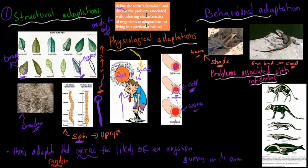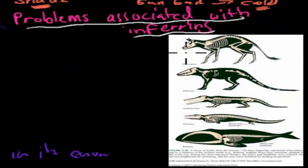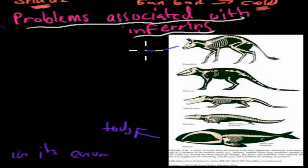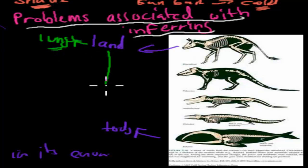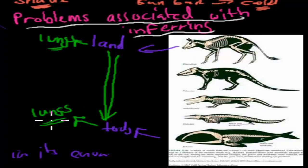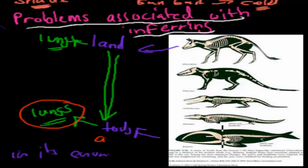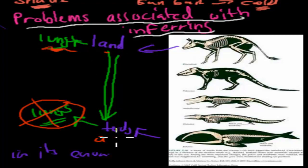The problem associated with inferring characteristics as adaptations is illustrated by the whale's evolution. Millions of years ago the whale's ancestor lived on land and needed lungs to breathe air. Over millions of years it returned to the ocean, but it still has those lungs. Overall, those lungs aren't really a benefit in water — gills would be better. So saying lungs are an adaptation for breathing better in water would be false; they were an adaptation for a past ancestor living on land.